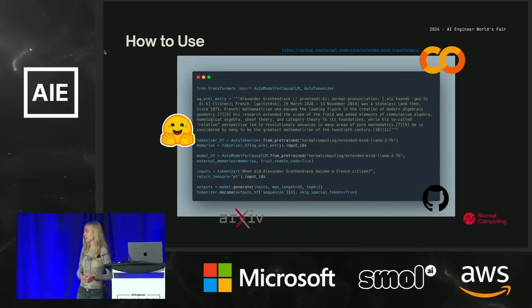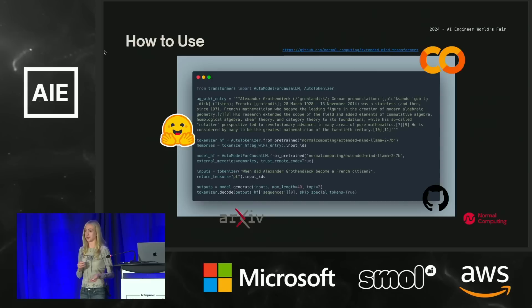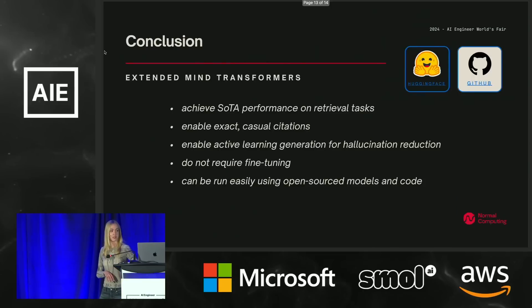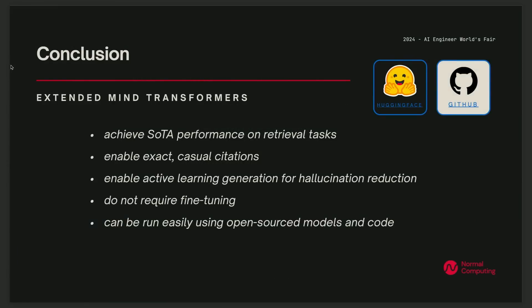We have a whole collection of these models on Hugging Face, all the code is on GitHub, as well as that dataset, and I encourage you all to read the paper for more technical details. It's actually pretty easy to use these things — it's as simple as passing those memories in as inputs, as tokens, into the model during instantiation. You can dynamically change them after that as well. To conclude: these new kinds of models achieve impressive performance on retrieval tasks, enable great new kinds of citations, enable a new hallucination reduction technique inspired by active learning, do not require fine-tuning unlike long-context methods, and can be easily run using our open-source models and code. Thanks so much, and find me after for questions.